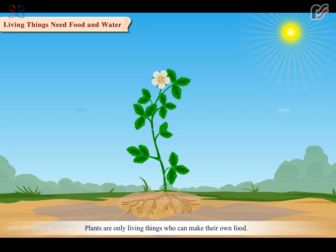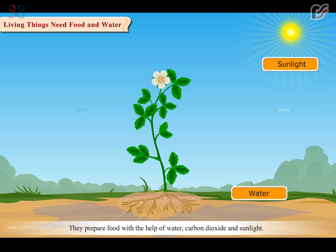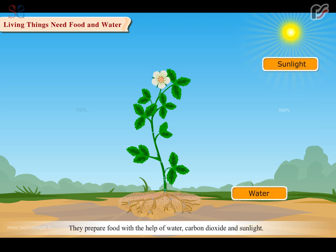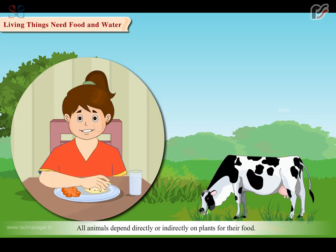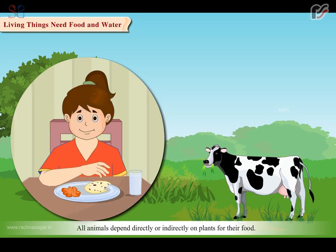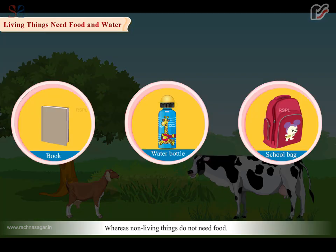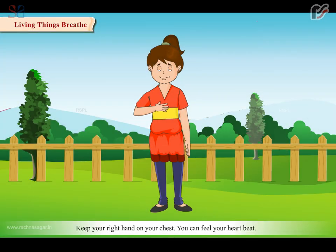Plants are the only living things that can make their own food. They prepare food with the help of water, carbon dioxide and sunlight. All animals depend directly or indirectly on plants for their food. Whereas, non-living things do not need food.